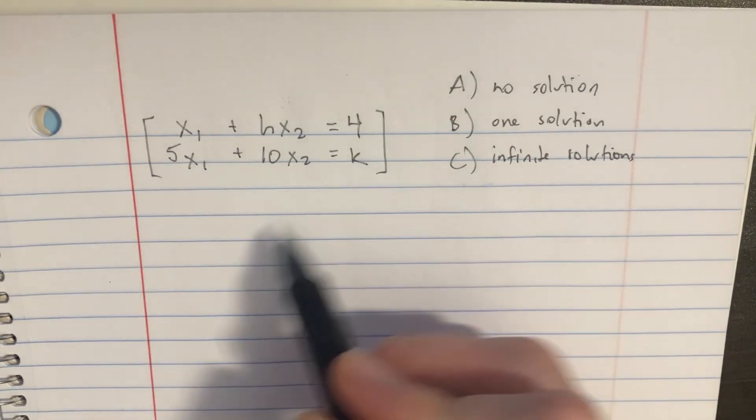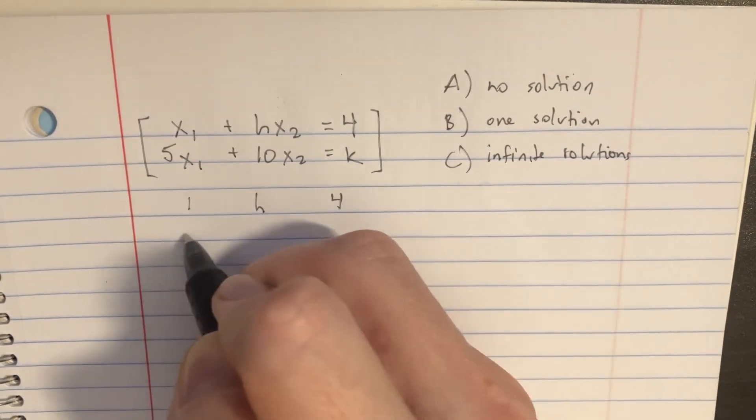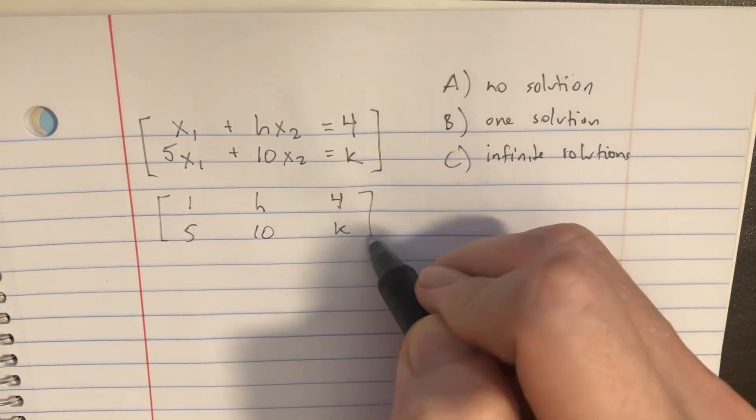So we'll start with these two and create a little matrix out of this. So we'll go 1, h, 4, 5, 10, and k. And that will be the matrix.